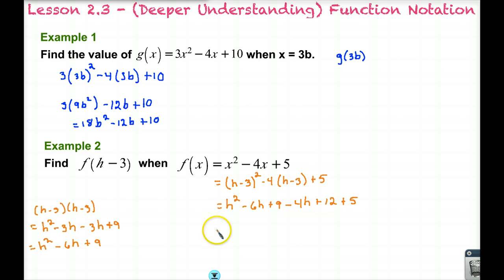On my final step, I will just combine my like terms. I have h². Then I have -6h and -4h, which gives me -10h. A plus 9 and a plus 12 and a plus 5, which gives me plus 26. And now I'm finished. Our final extra deeper understanding lesson will be on rate of change.